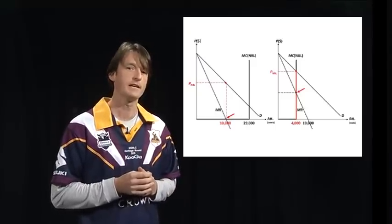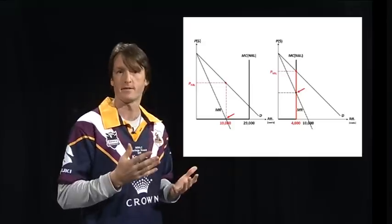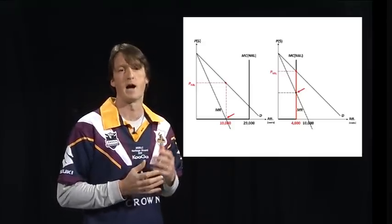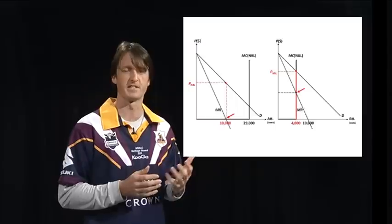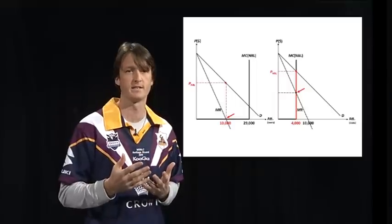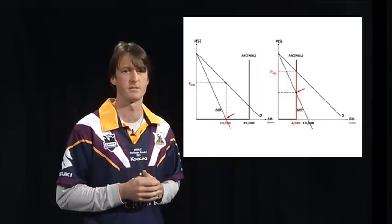The conclusion here, the Tigers sell every game out, every single time, and in the absence of being able to shift the demand curve outwards, are happy with the status quo. Whereas the Storm are likewise perfectly content to have only 10,000 turn up to their games.